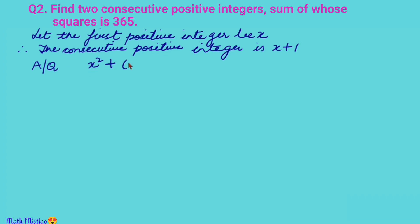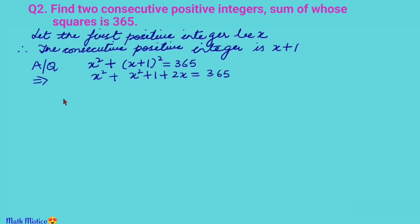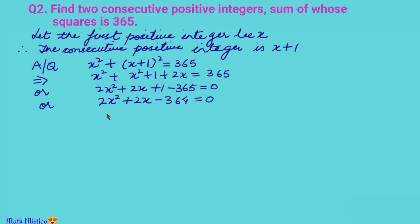We are given that the sum of the squares of these numbers is 365, so x² + (x + 1)² = 365. Expanding using the identity (a + b)² gives x² + x² + 2x + 1 = 365, or 2x² + 2x − 364 = 0. Dividing throughout by 2 gives x² + x − 182 = 0. This is the equation representing this situation.